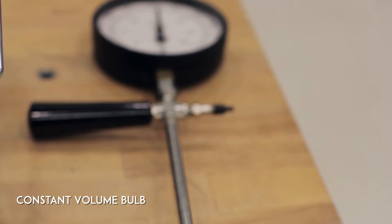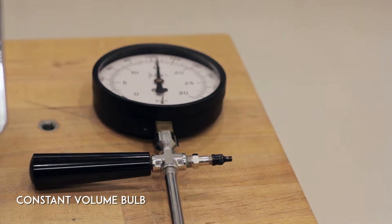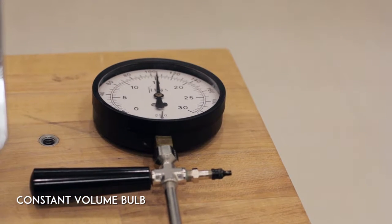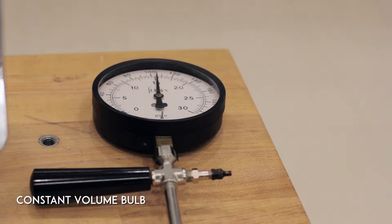We can't actually perform that experiment, but we can do something almost as useful. This apparatus is called a constant volume bulb. It contains air sealed in and uses pressure as a mechanism to indirectly measure temperature. We can change the temperature of the gas in the bulb and read off the corresponding change in absolute pressure.